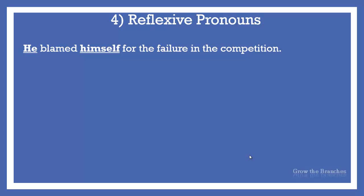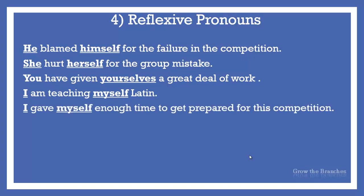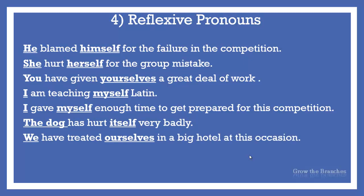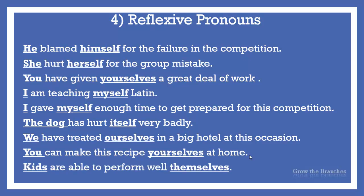A reflexive pronoun can be a direct object or indirect object. He blamed himself for the failure in the competition — he is subject, himself is object; subject and object are the same. She hurt herself for the group mistake. You have given yourselves a great deal of work — yourselves here is an indirect object and work is the direct object. I am teaching myself Latin. I gave myself enough time to get prepared for this competition. The dog has hurt itself very badly. We have treated ourselves in a big hotel. You can make this recipe yourselves at home. Kids are able to perform well themselves.